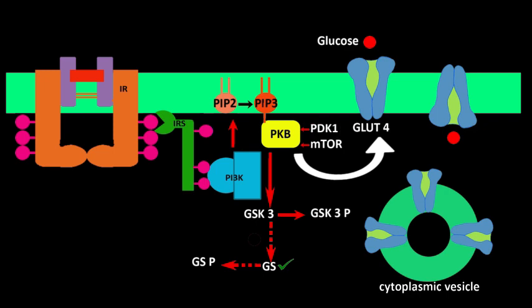In the PI3K pathway, PI3 kinase binds to tyrosine-phosphorylated sites of IRS. The activated PI3K converts the membrane lipid PIP2 into PIP3 — that is, phosphatidylinositol-4,5-bisphosphate is converted into phosphatidylinositol-3,4,5-triphosphate. PIP3 is a phosphoinositide that serves as a second messenger in this pathway.